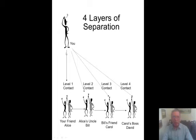Let's look at four layers of separation. Here is you. Your level one contact would be your friend Alice. The second level would be Alice's Uncle Bill. Third level would be Bill's friend Carol. Fourth level, Carol's boss David. So you can see your initial contact results in several layers of contact, but ultimately gets you to somebody that could hire you.